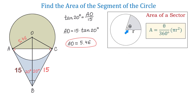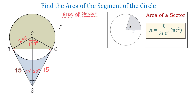The area of a sector with angle theta and radius r is given by: A equals theta over 360 degrees multiplied by pi r squared. In our figure, angle theta measures 140 degrees, because in the right triangle AOB, if angle B measures 20 degrees then the adjacent angle at O measures 70 degrees, and 70 plus 70 makes 140 degrees. So the area of the sector equals 140 over 360 multiplied by pi times 5.46 squared, which is approximately 36.42 square units.